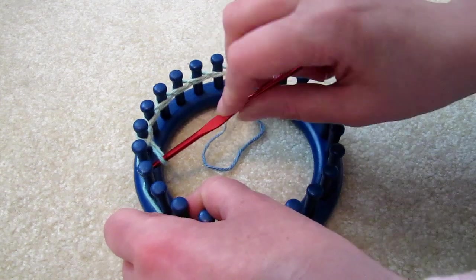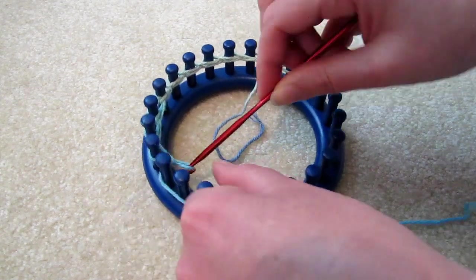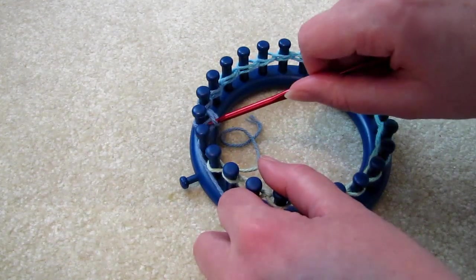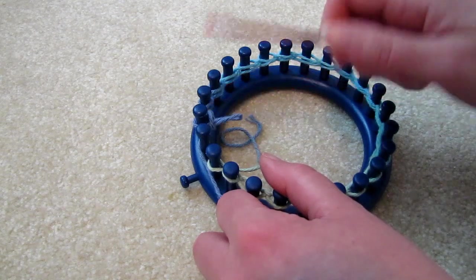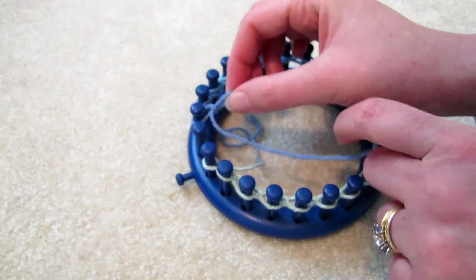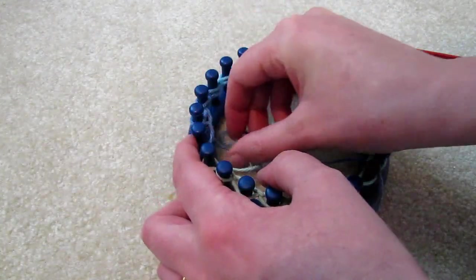So we'll cast on 24 pegs. Bring the yarn inside and place the last loop over the last peg.